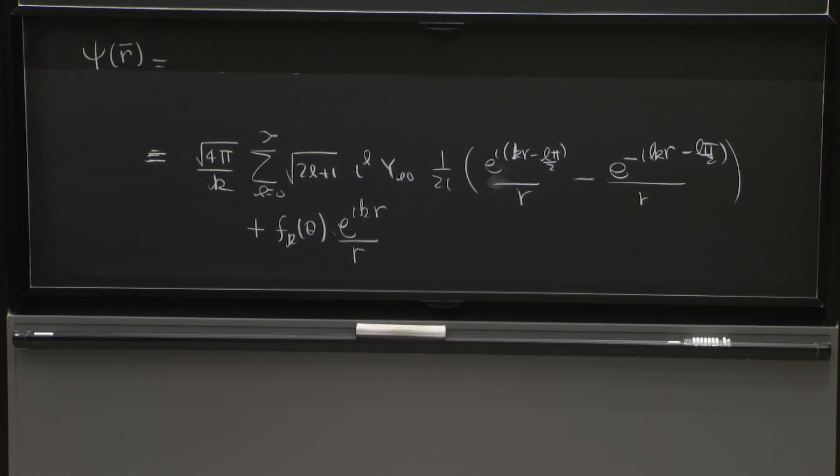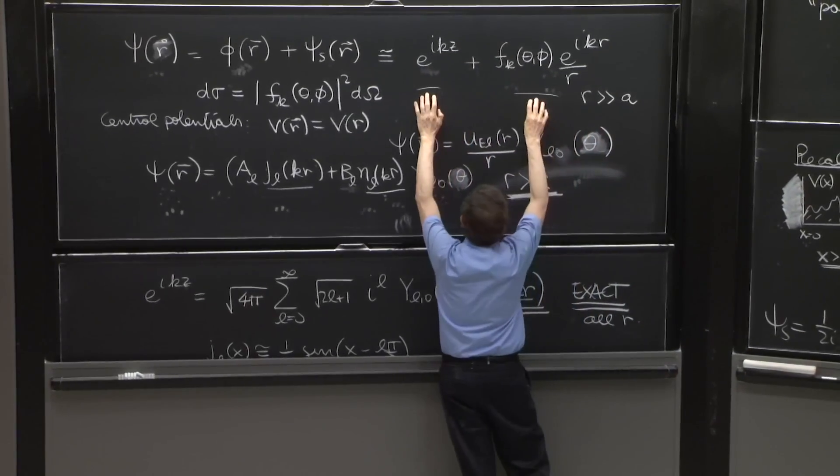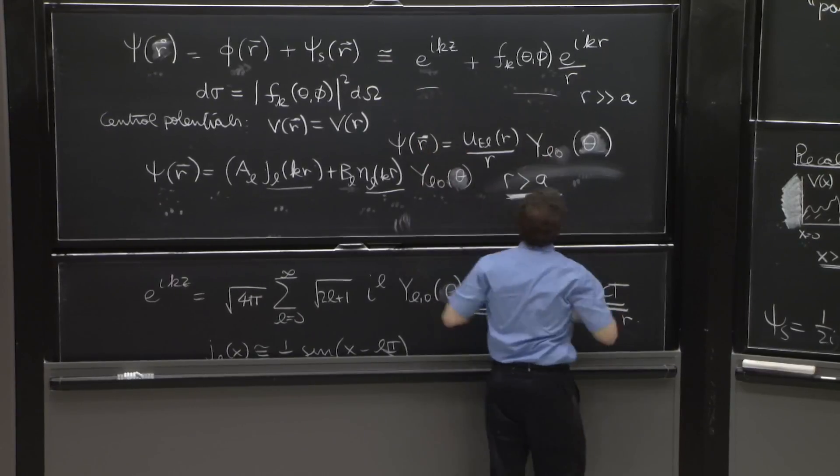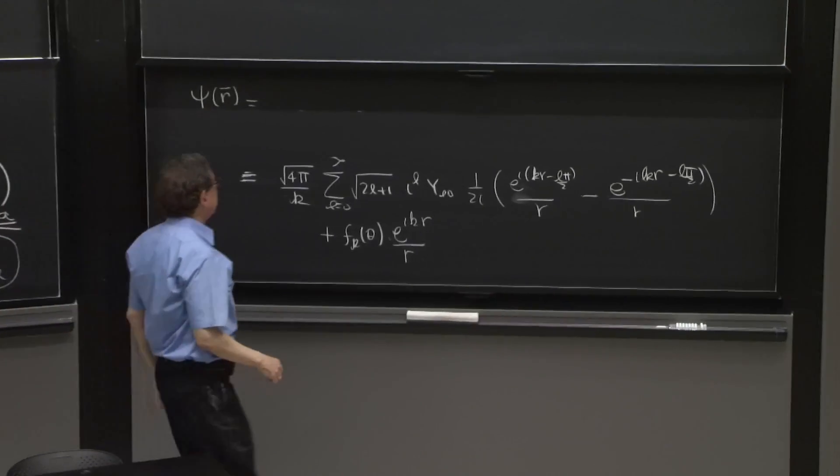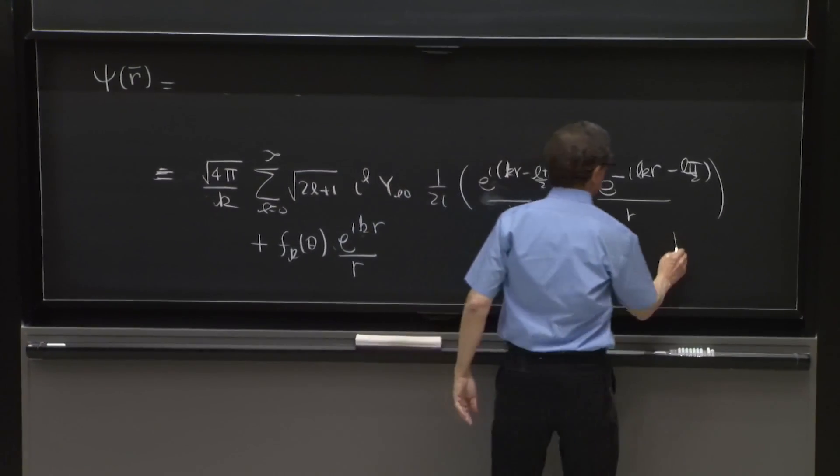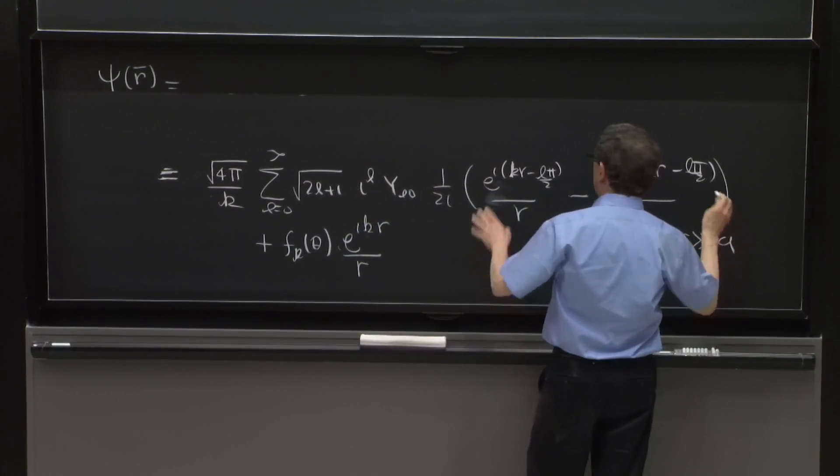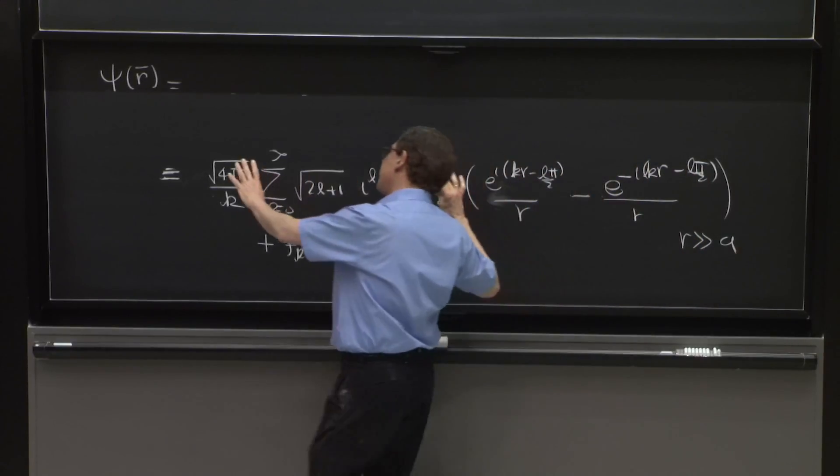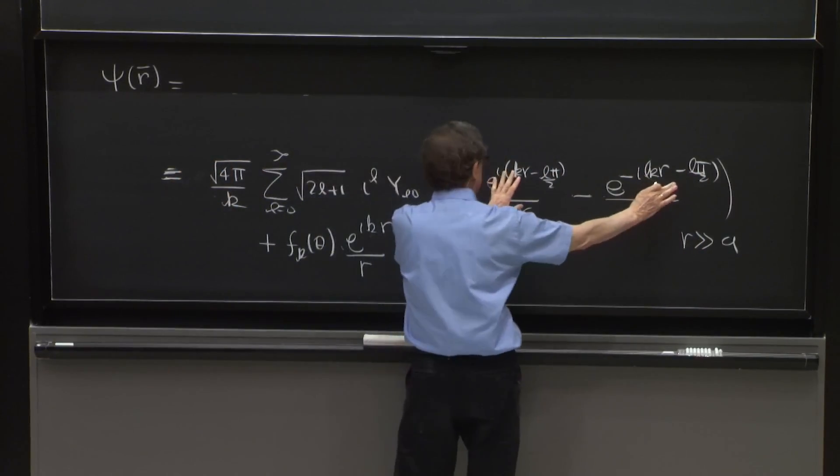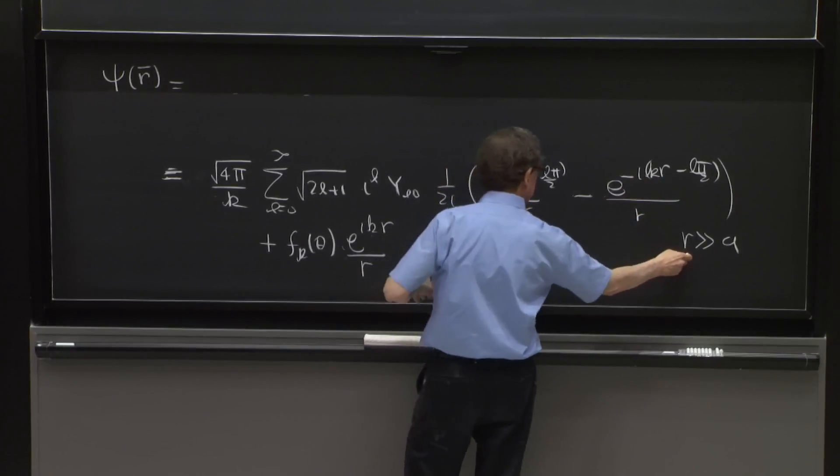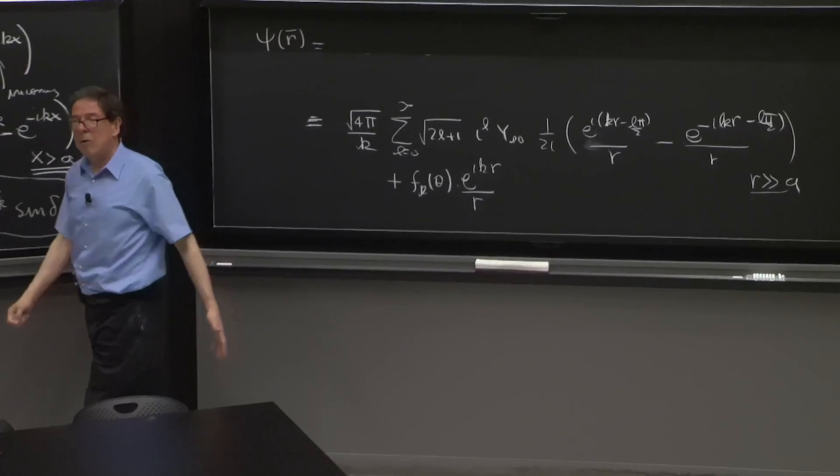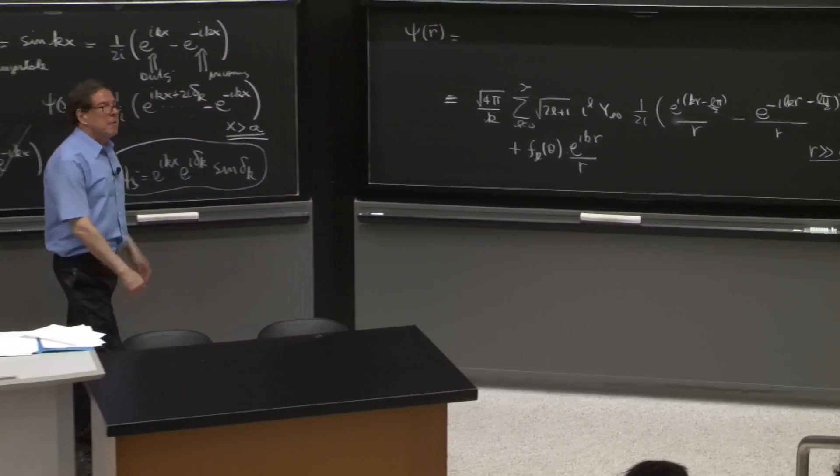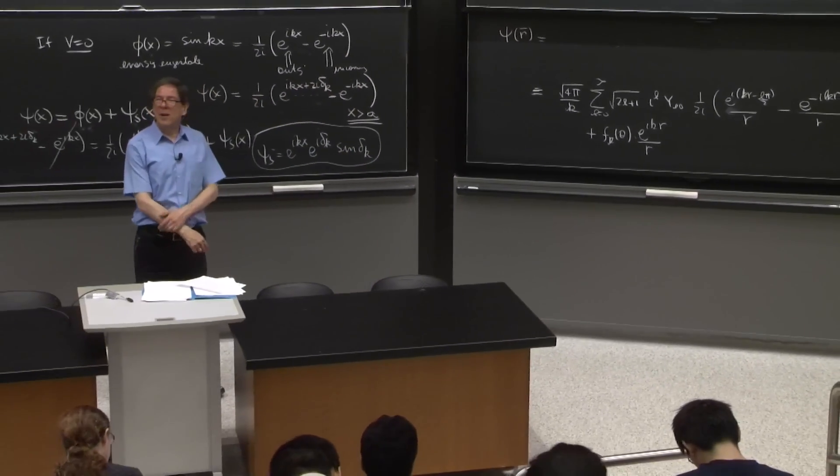So what do we have here? We've written the right-hand side of this equation. I copied it. I have not done anything except taking r much greater than a, because otherwise, in the plane wave e to the ikz, I could not have expanded the Bessel functions unless I took r greater than a. But that's good, because we now have our waves. We have our waves there.